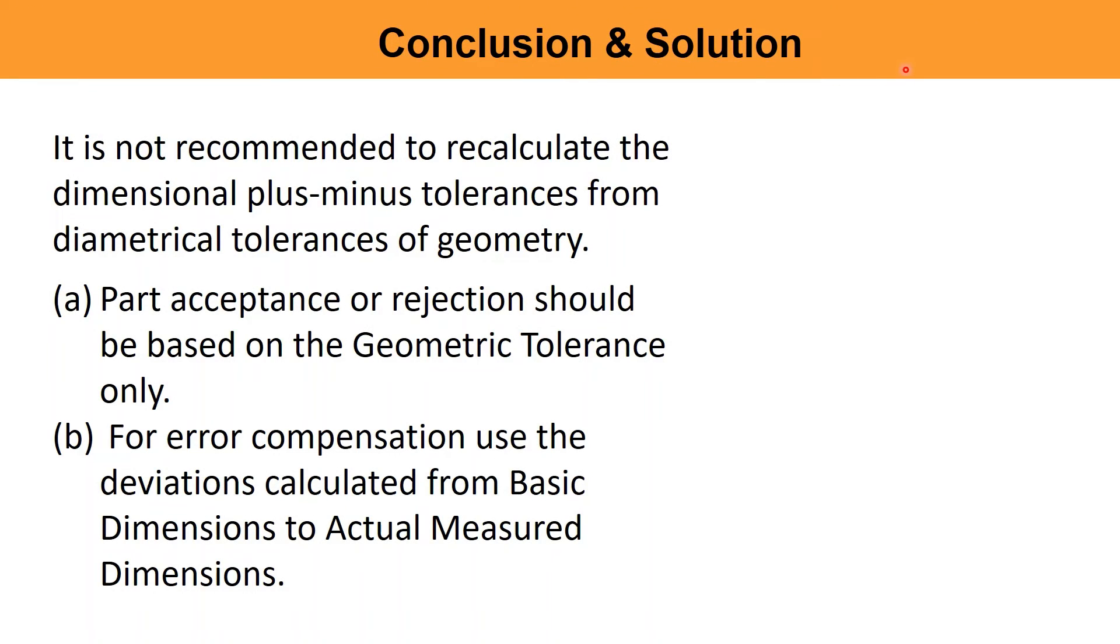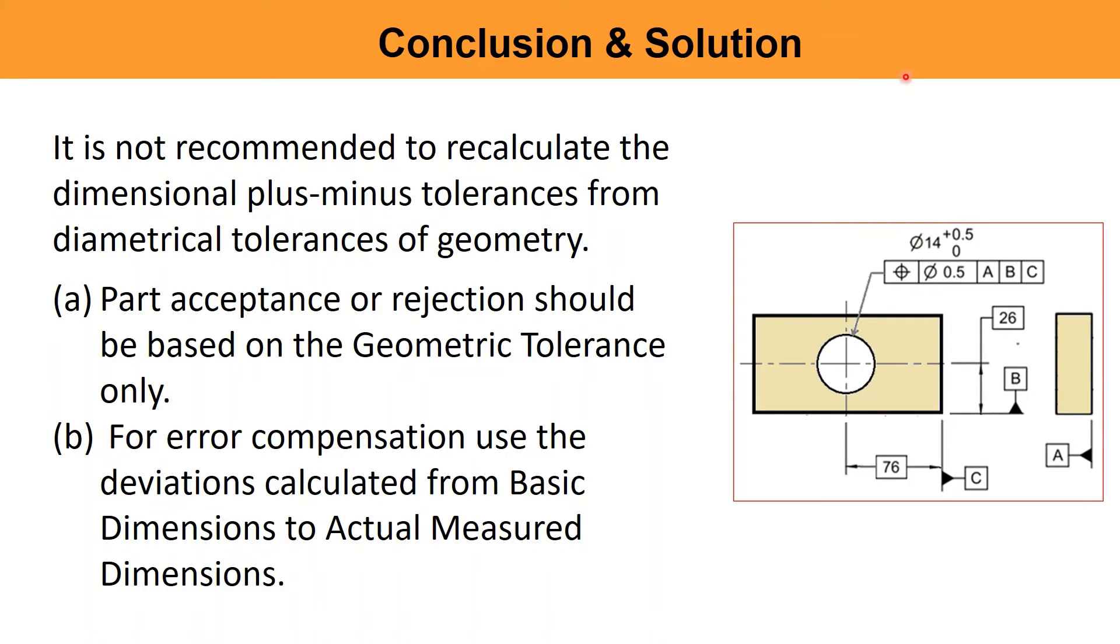So, finally, what is the conclusion and what is the solution? It is not recommended to recalculate the dimensional plus minus tolerances from diametrical tolerances of geometry. It means, reverse engineer tolerances from the given geometrical tolerances are not recommended. Part acceptance or rejection should be based on the geometric tolerance only. Now, for error compensation, use the deviations which is calculated from basic dimensions to the measured actual dimensions. That value is to be treated as an error for the compensation or correction applied to the machine tool.